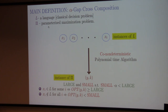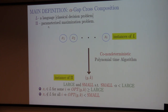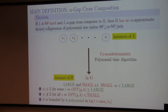Even if you come up with an alpha-approximate solution, it will be smaller than the large value — that's why we need this gap condition. We just need to create a gap: all output instances either have a large optimum value or a small optimum value, with an alpha factor gap between them. As usual, we want k bounded by log T plus max |xi|. The theorem says: if L is NP-hard and L alpha-gap cross-composes to pi where alpha is a constant, then pi has no alpha-approximate kernel or compression of polynomial size unless something bad happens.